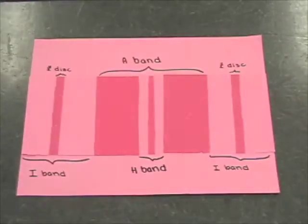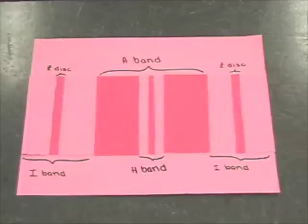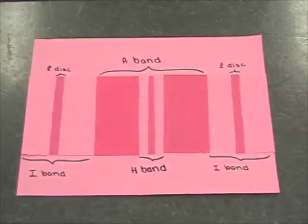The Z-discs are found at the end of the sarcomere and separate one sarcomere from the next. The I-band is the lighter shaded area inside the sarcomere that contains the rest of the thin filaments but no thick filaments. A Z-disc passes through the center of each I-band.